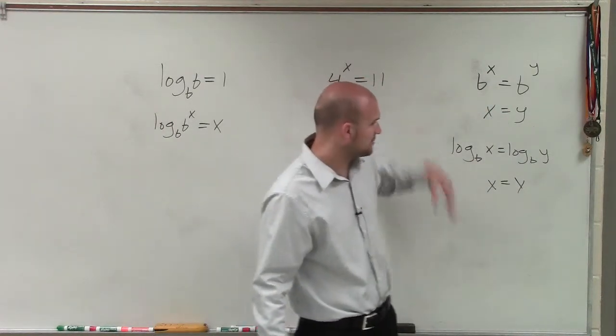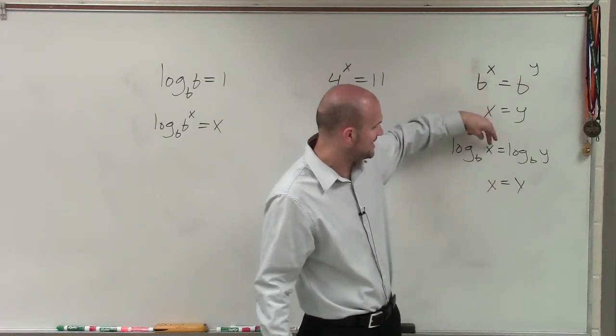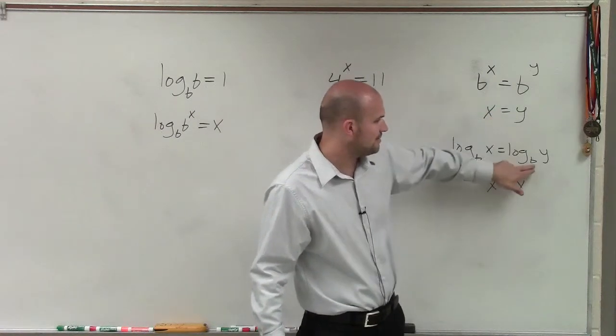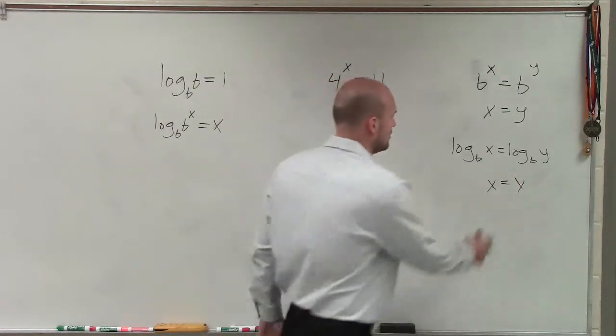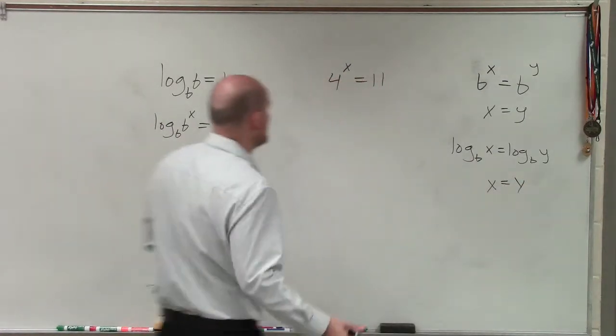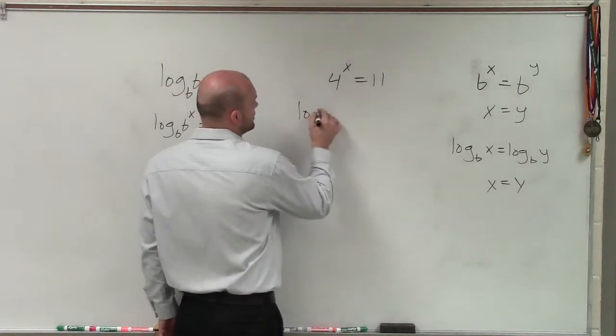The one-to-one property for logarithms states, if I have the log of the same base equal to x equal to the log of base b equal to y, since they have the same bases, x is going to equal y. And so therefore, I can take the log of both sides.